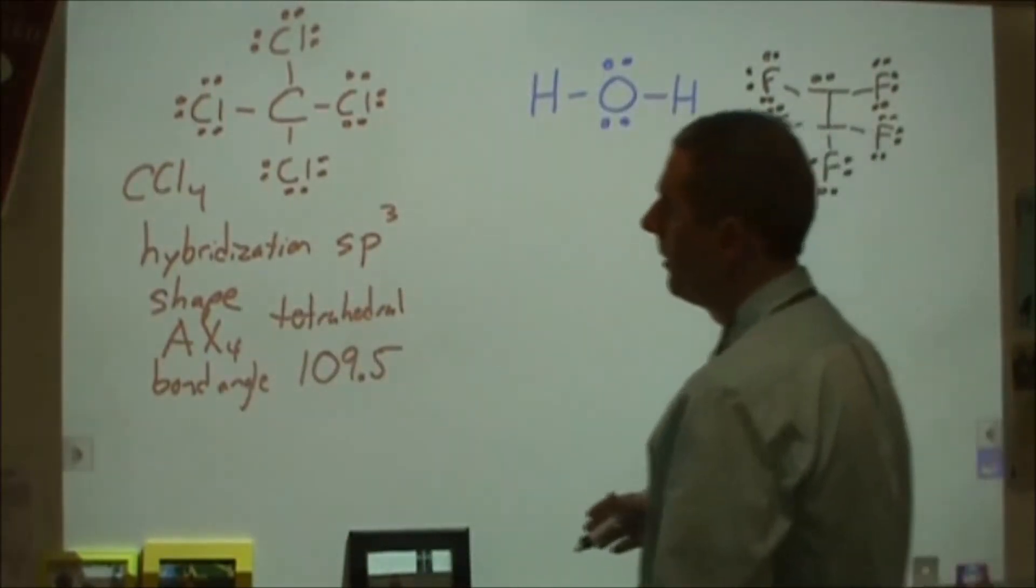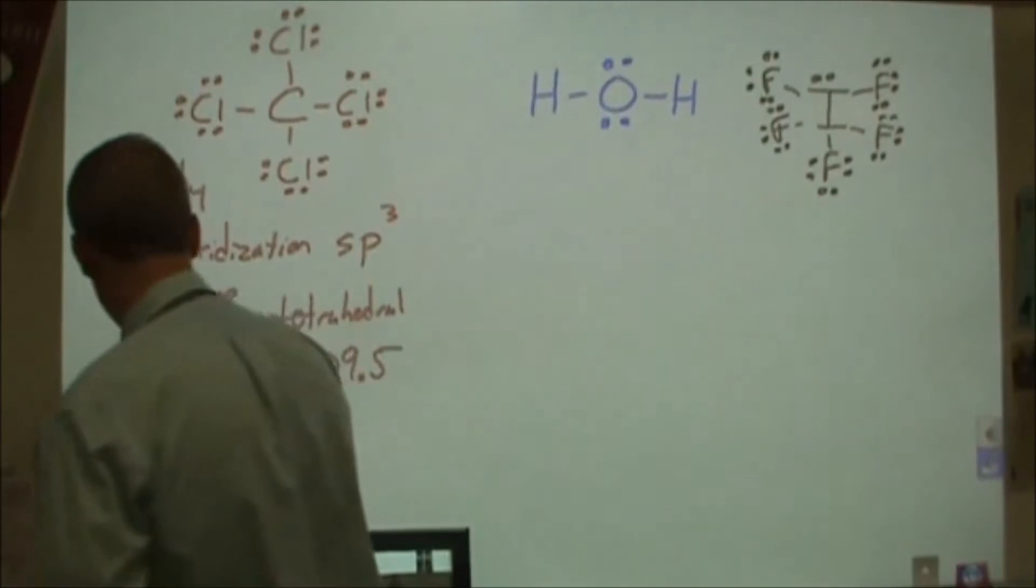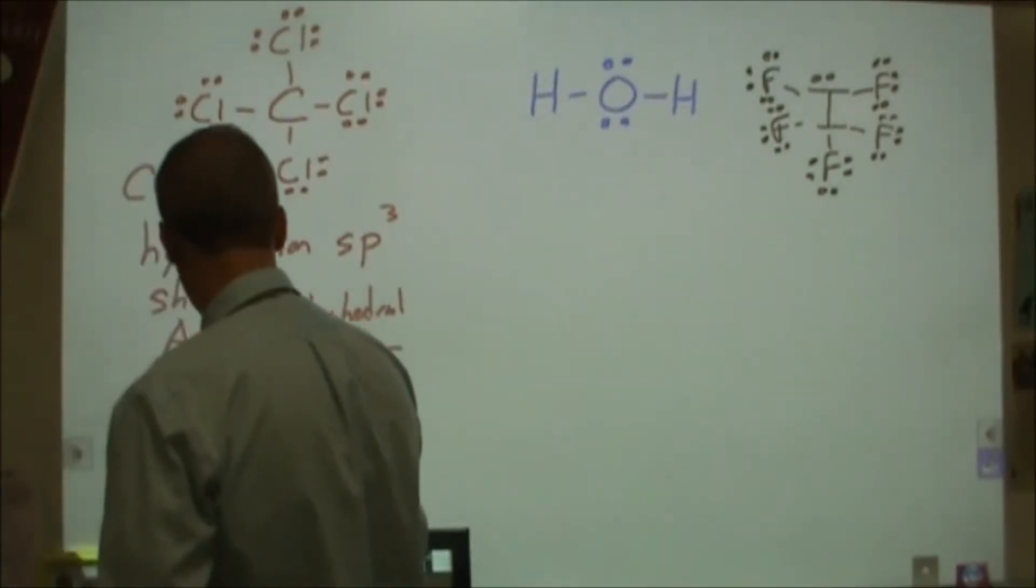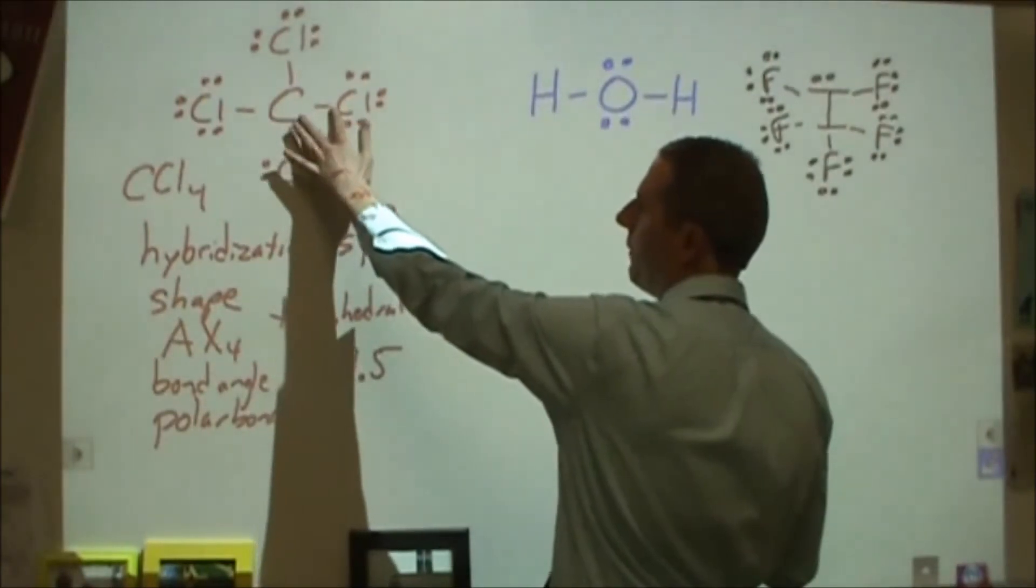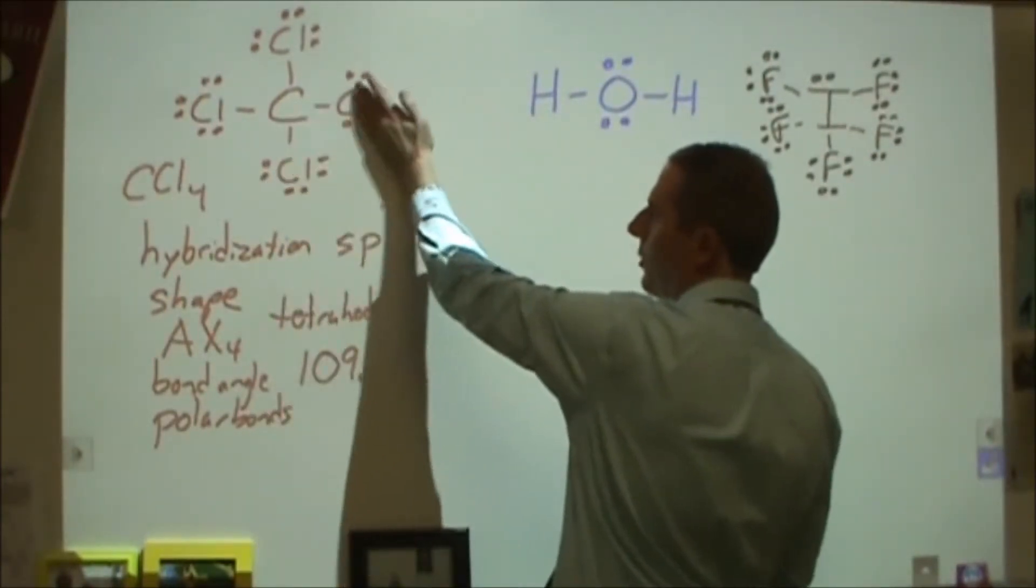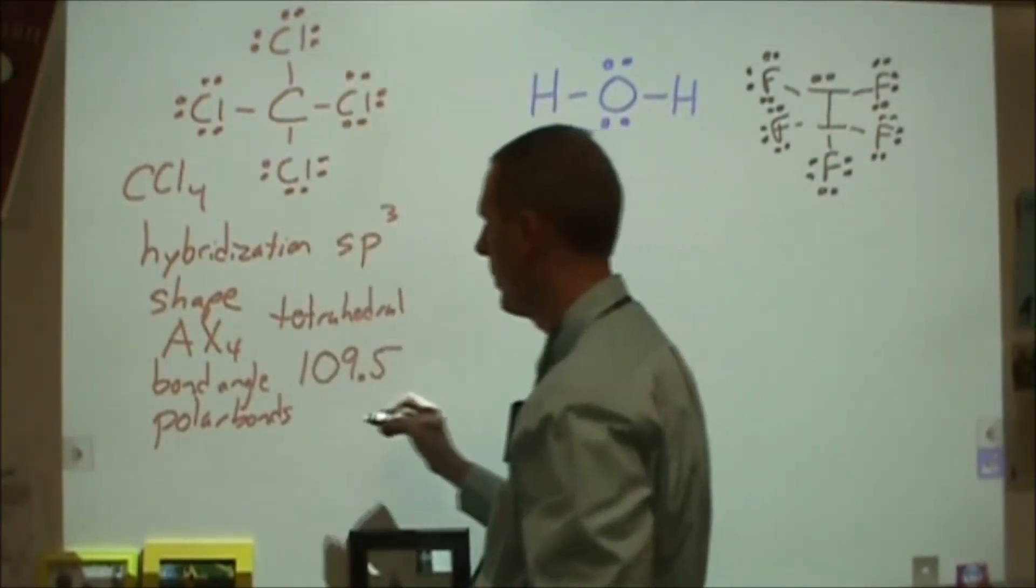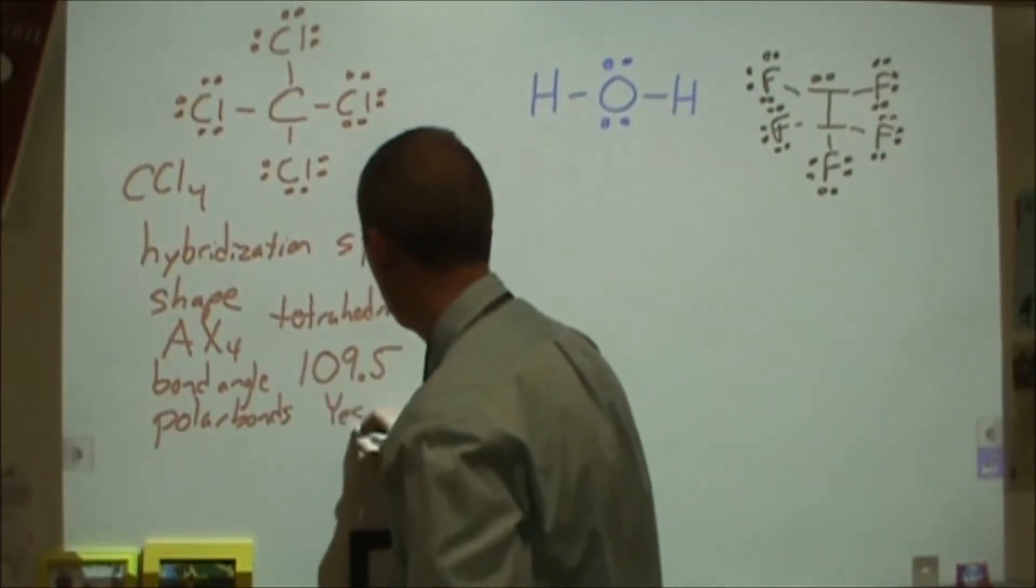And then after that, I can actually start to look at whether this thing has polar bonds. Carbon and chlorine have a different enough electronegativity that I'm going to shift electron density away from the carbon towards the chlorine. So yes, that will have polar bonds.